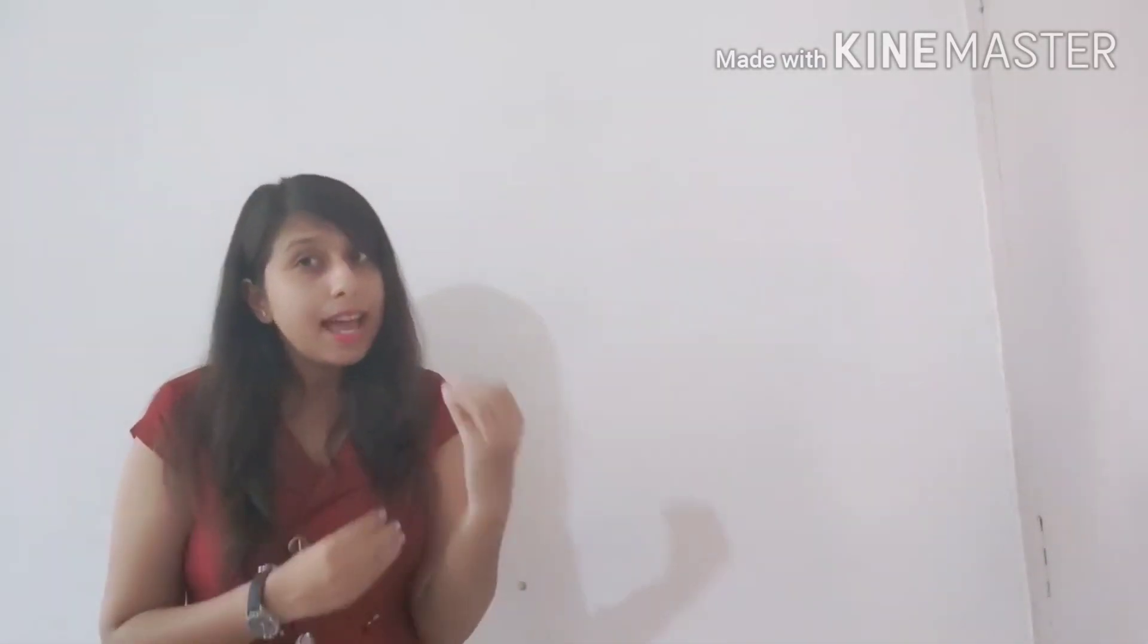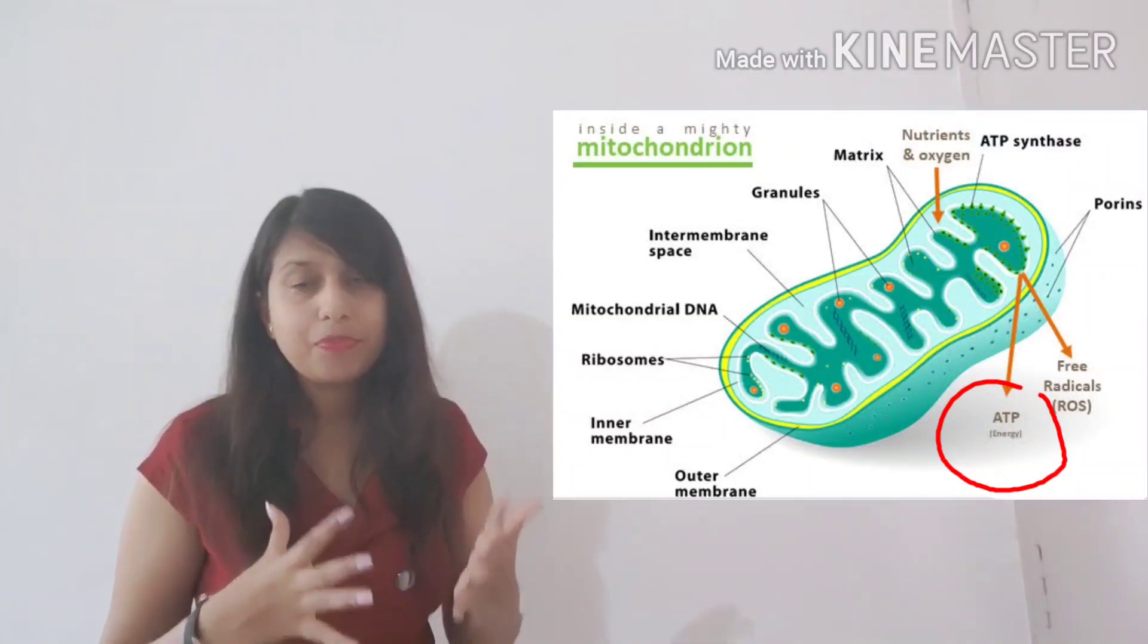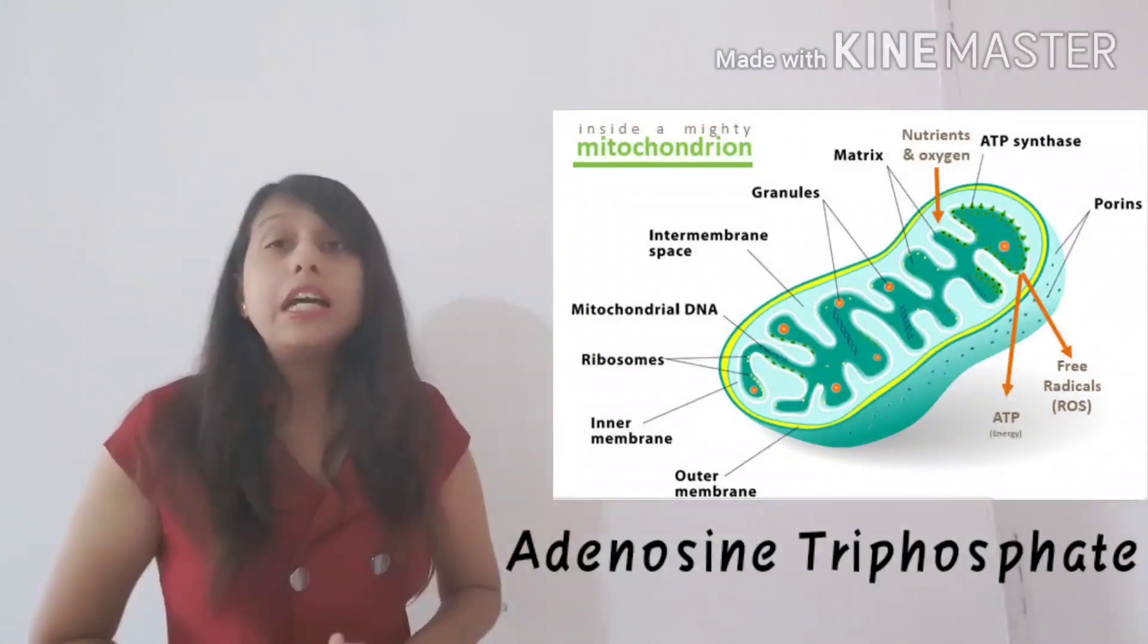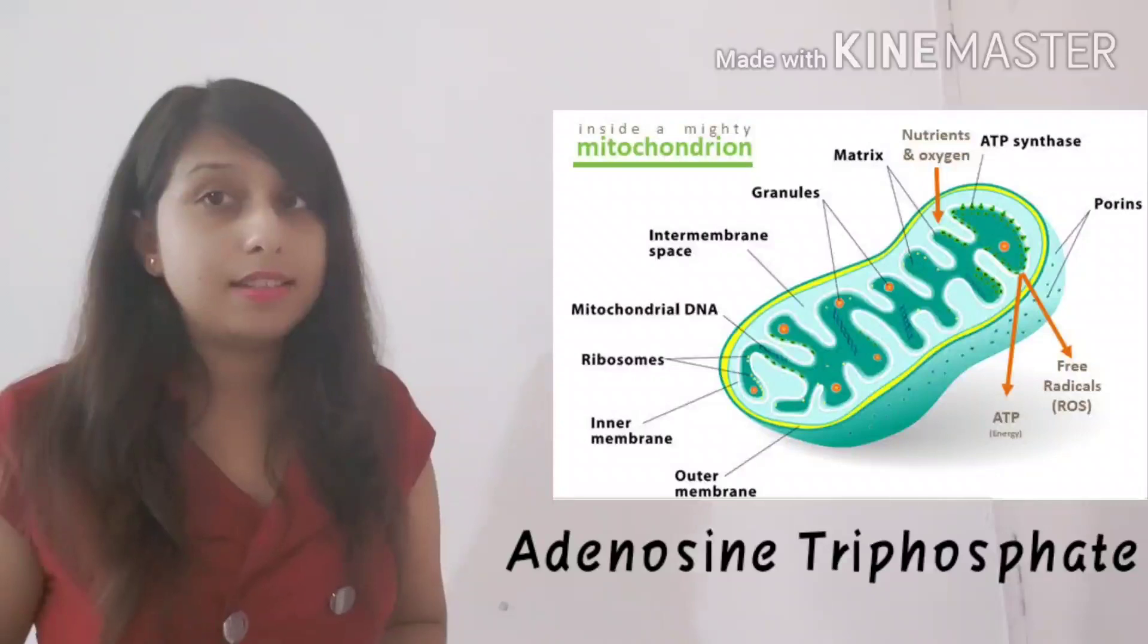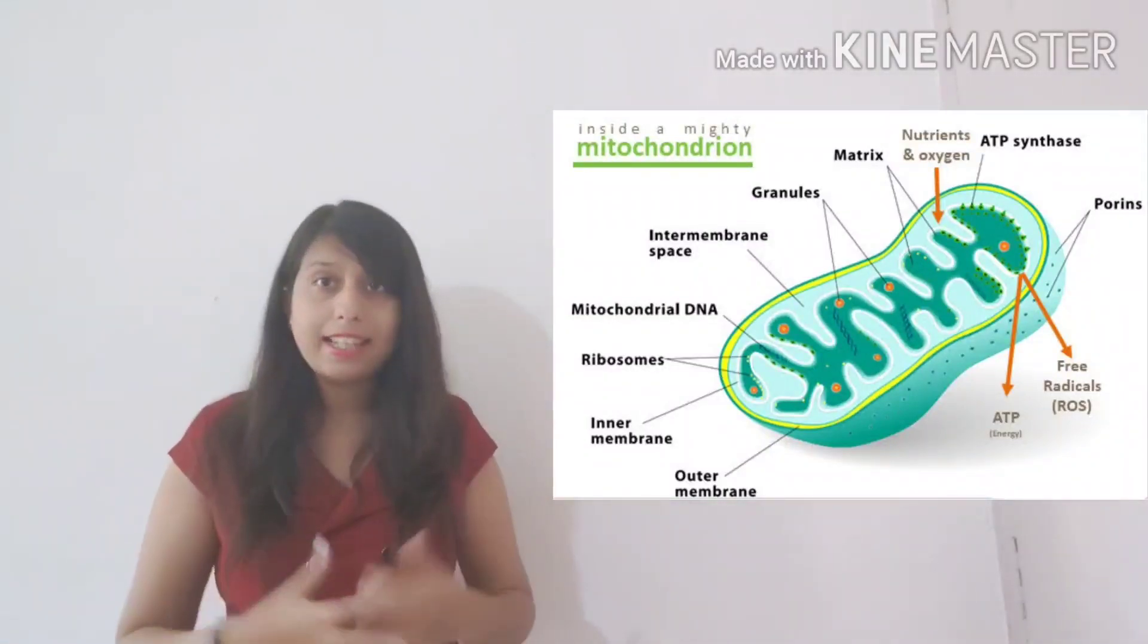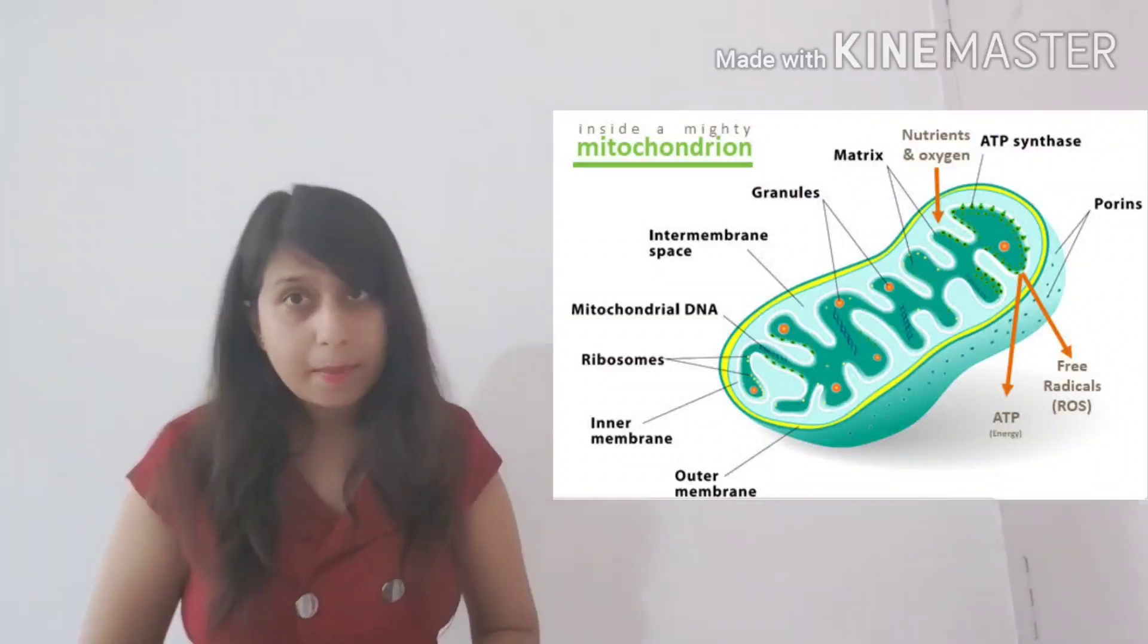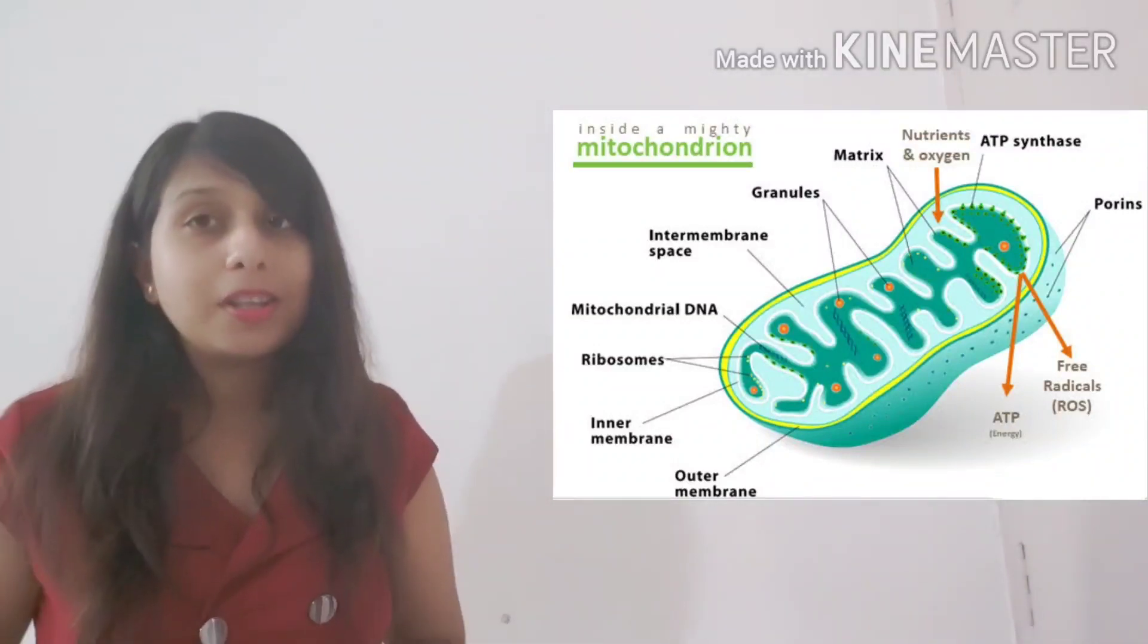Now this energy which is released inside the cell, it is actually released in the form of ATP, adenosine triphosphate. It is known as the energy currency of the cell. Just as how we have the currency like Indian rupees or dollars or euros, in the same way, this energy can also have the currency which is ATP. So I hope you understood about mitochondria.